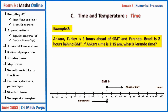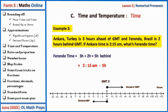Example three: Ankara, Turkey is three hours ahead of GMT, and Fernando, Brazil is two hours behind GMT. If Ankara time is 12:15 am, what is Fernando's time? Fernando is two hours behind GMT, and Ankara is three hours ahead of GMT, so the time difference is five hours — Fernando is five hours behind Ankara. Subtracting five hours from 12:15 am gives 9:15 pm. So the time at Fernando is 9:15 pm.